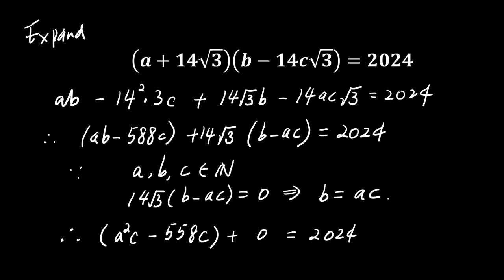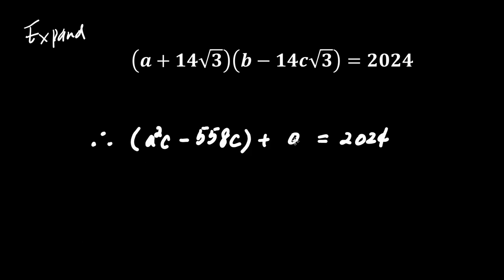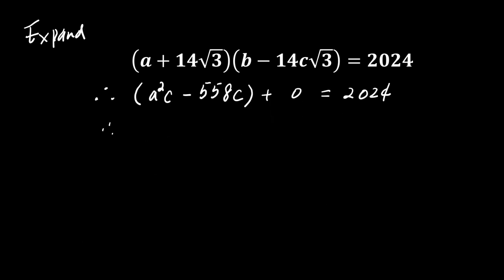Substituting this into the first equation gives us a squared times c minus 588c equals 2024. Factoring out c, we get a squared equals 2024 divided by c plus 588.